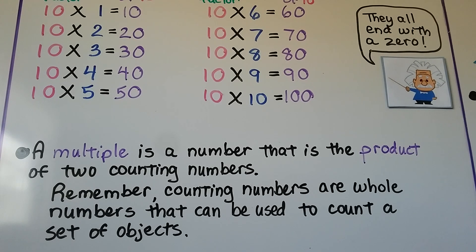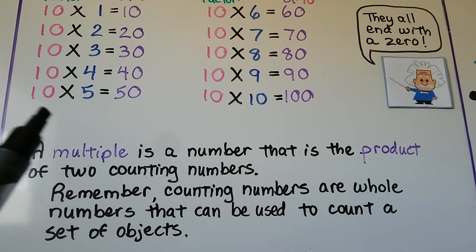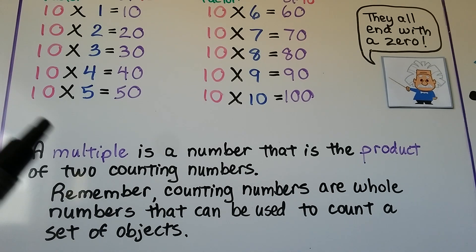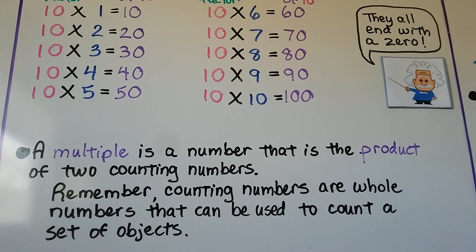A multiple is a number that is the product of 2 counting numbers. Counting numbers are whole numbers that can be used to count a set of objects, like 1, 2, 3, 4, 5, 6, 7, 8, 9, 10. Those are counting numbers, those are whole numbers. And a multiple is the product of 2 counting numbers.